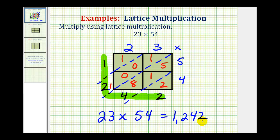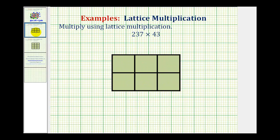Let's take a look at another example. Here we have 237 times 43, and since we have a three-digit number times a two-digit number, we need a table that has three columns and two rows. So we'll write 237 here and 43 here. Then we'll make the diagonals to form the lattice.